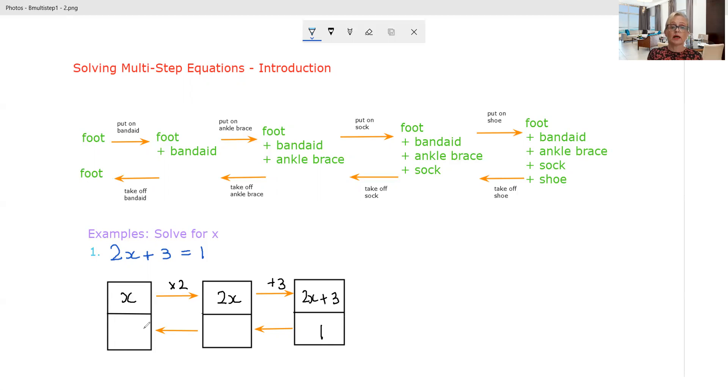We have information about what that equals. That equals 1. Now we're going to go back the other way by doing the opposite thing in the opposite order. So the last thing that was done is the first thing that has to be undone. 1 minus 3 is negative 2. Then we're going to undo this multiplication by 2 by dividing by 2. Negative 2 divided by 2 is negative 1. Let's check if that works. 2 times negative 1 is negative 2 plus 3. Yes, that does equal 1.